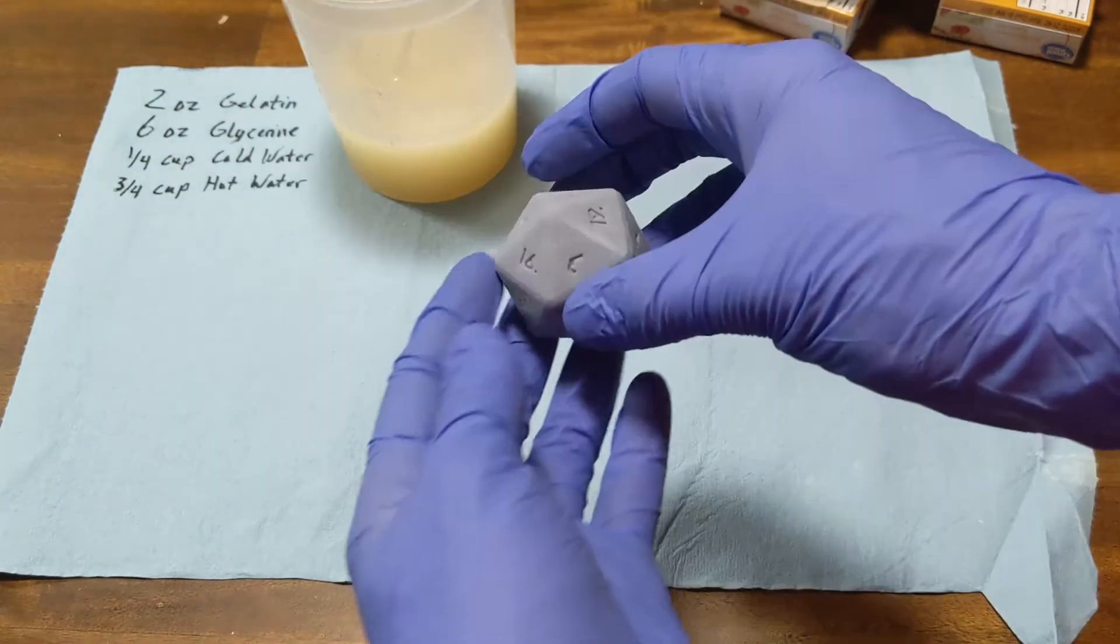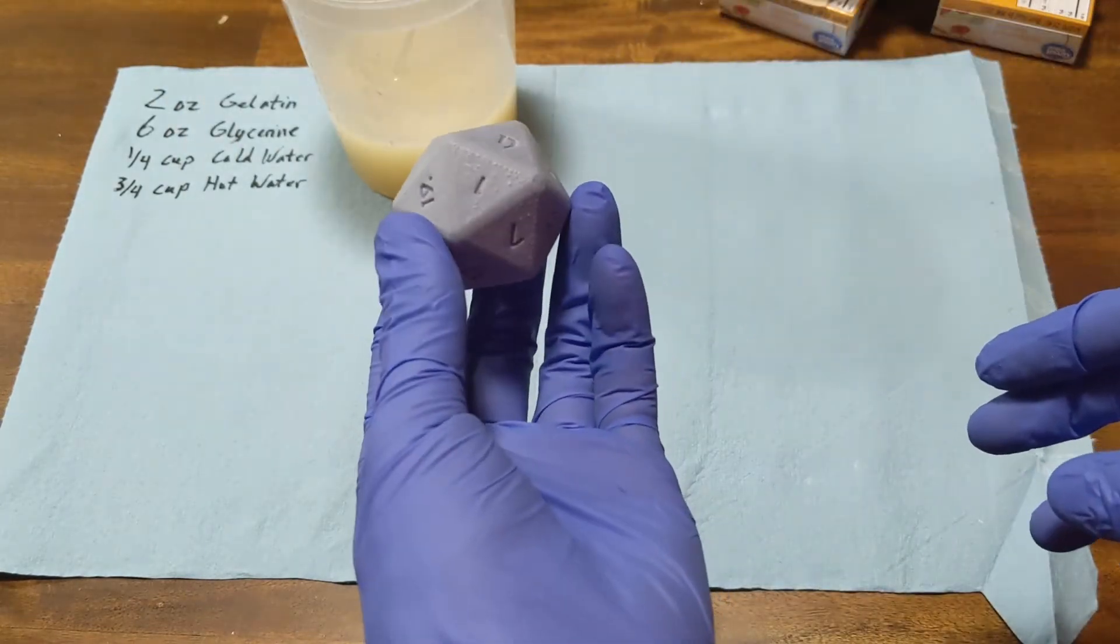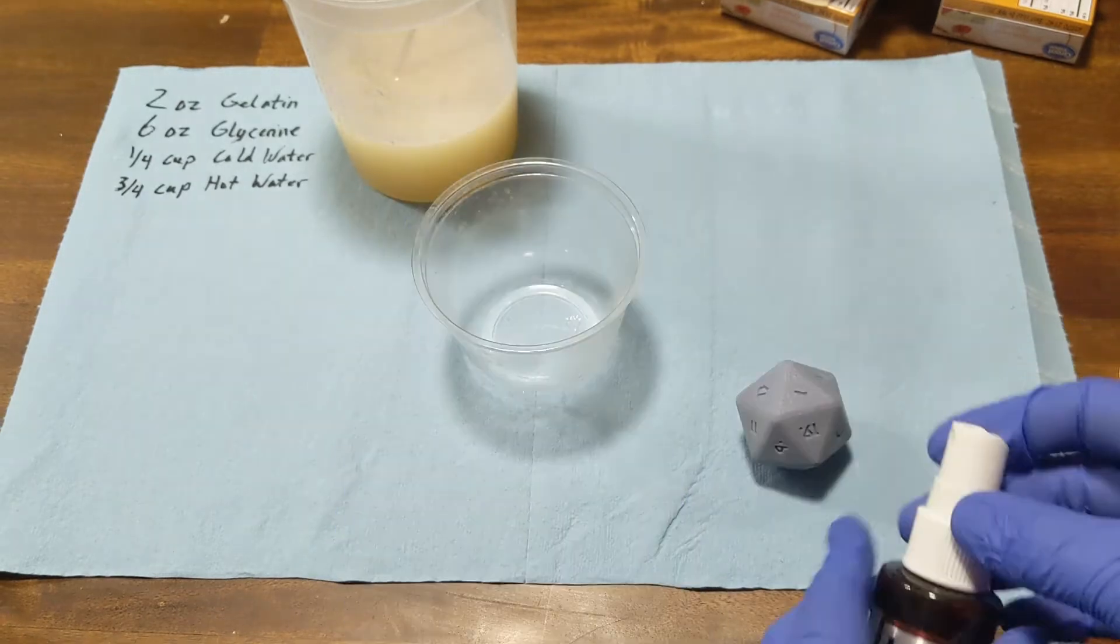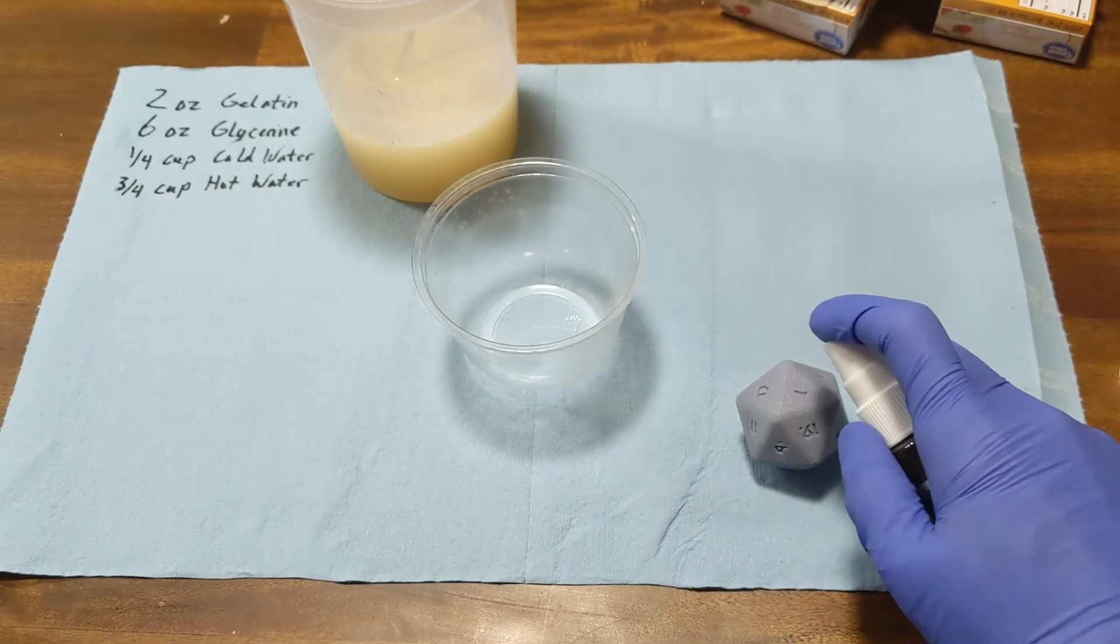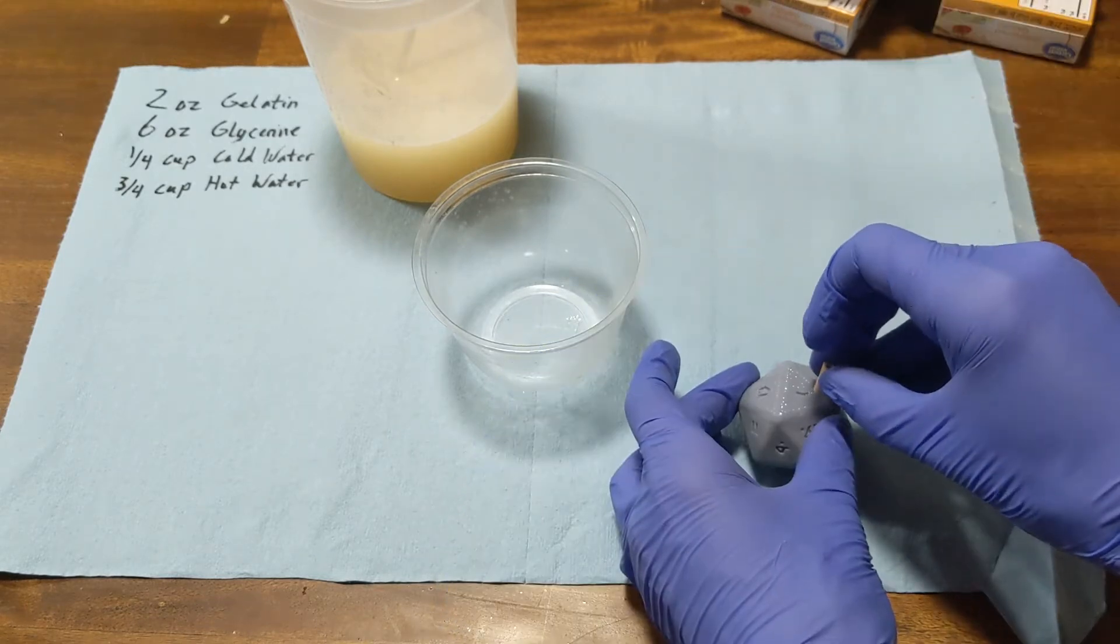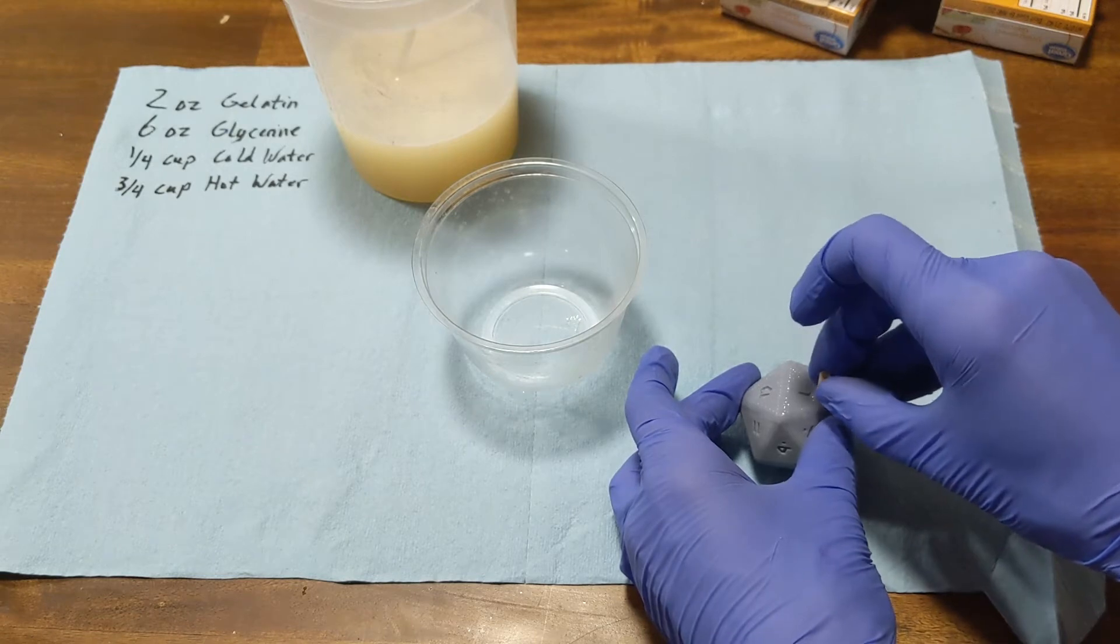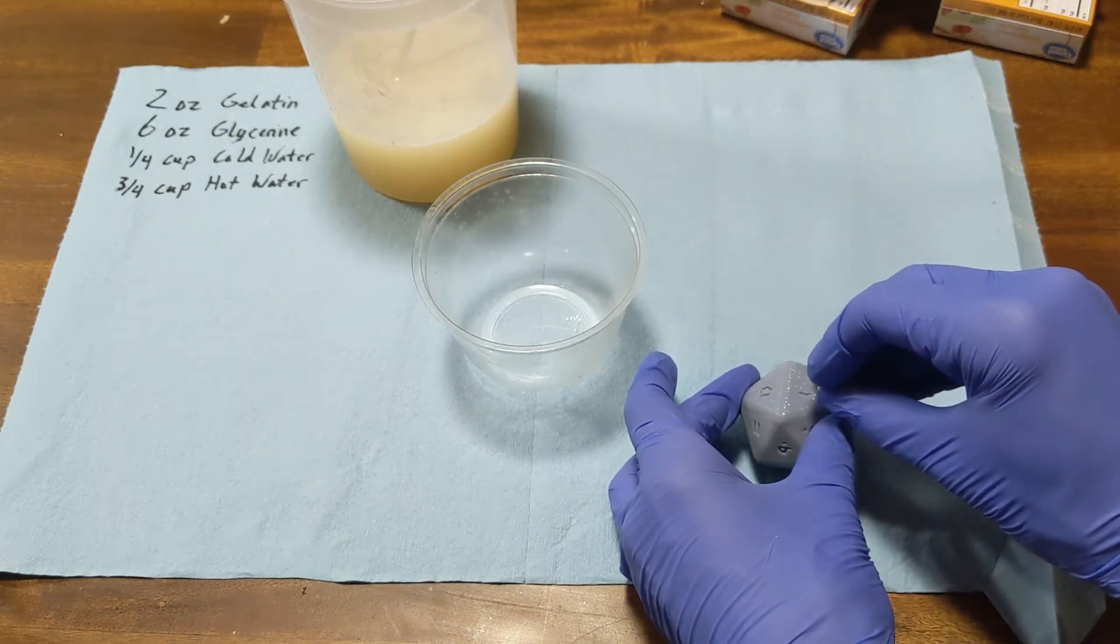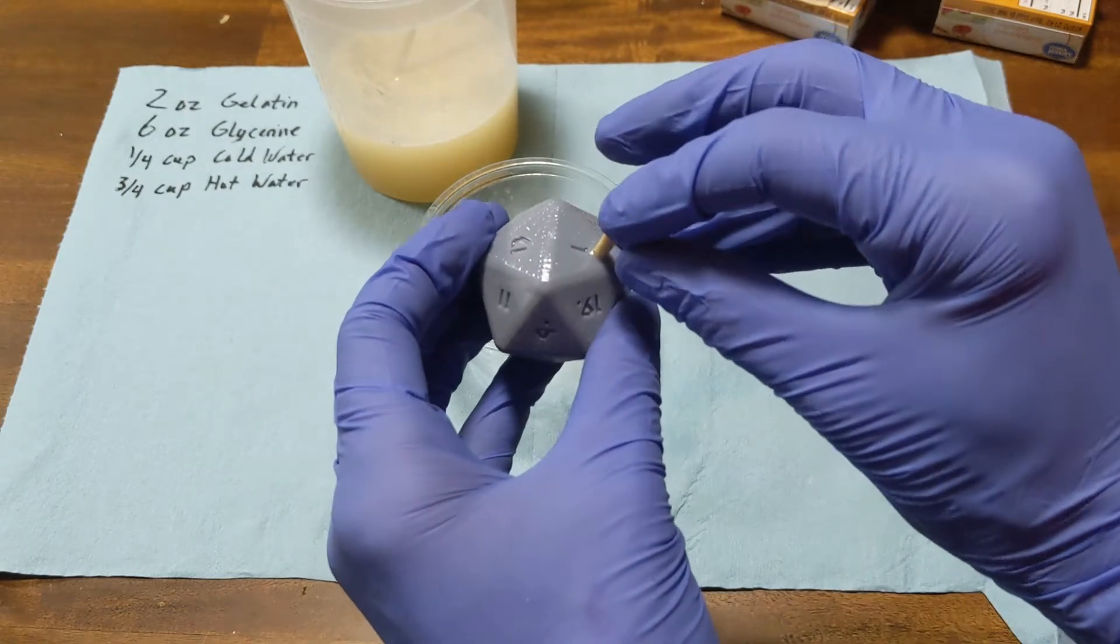So before I do that, I'm going to take my 3D printed dice that I didn't even sand or anything, just to test it out to see how it does with cure inhibition, which should be none. It should work just fine as it is gelatin. I'm going back to the old way of doing it with the putty in a cup, and in this case instead of a toothpick it's a chopstick because it's such a big die.